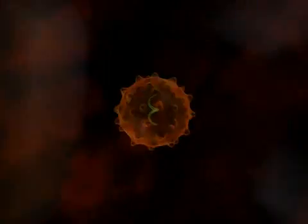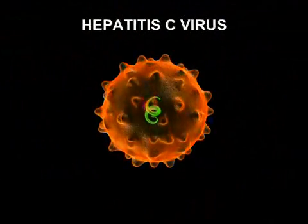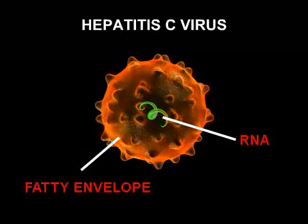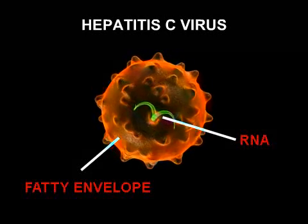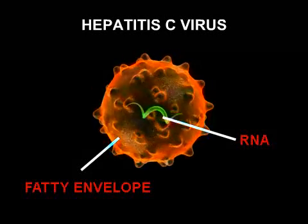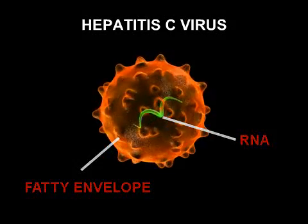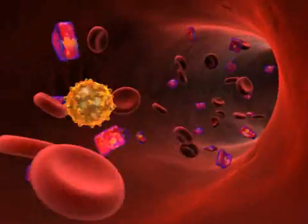The hepatitis C virus is a blood-borne pathogen and primarily affects the liver. The hepatitis C virus contains RNA, or ribonucleic acid, as the genetic material in its core, which is surrounded by a fatty envelope.